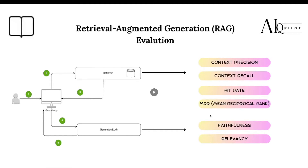For context precision, this metric ensures that the most relevant information is prioritized at the top rank of the retriever. When we request information from the retriever, it provides around four or five chunks of information relevant to the user's query, which the app then uses to generate the final prompt to the large language model. If we can ensure those retrieved chunks are relevant to the user query, we can use the precision metric to assess that. Context recall ensures that all the relevant parts or chunks directly related to the ground truth are captured.